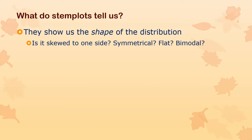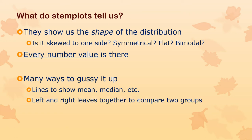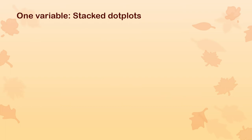Stem plots show us the shape of the distribution, and the shape reveals patterns. Is it skewed to one side? Very similar to what a box plot shows us — we use these for similar reasons. Is it symmetrical, with a lump in the middle that tapers off to both sides? Is it flat, with all values more or less evenly distributed? Is it bimodal — meaning there are two lumps — which is kind of an interesting pattern. Every number value is represented, and there are lots of different ways to make stem plots fancy.